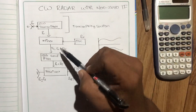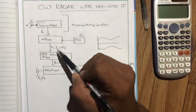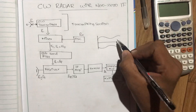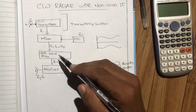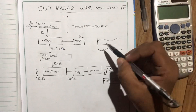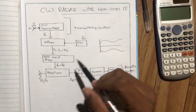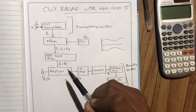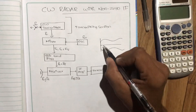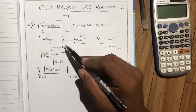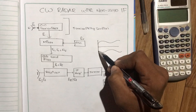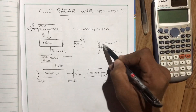This is the local oscillator. This is the frequency of the mixer. This is F0, F0, FIF. This is the signal. This is the sideband filter. We have a frequency of the mixer. This is the frequency of the mixer.